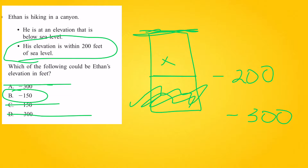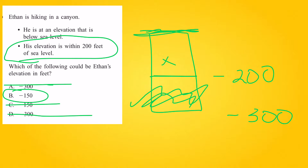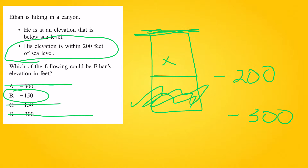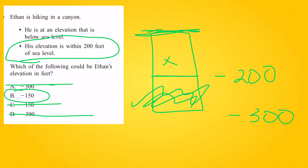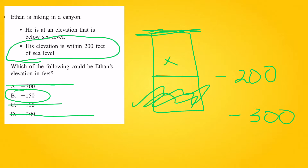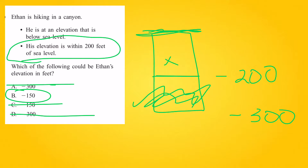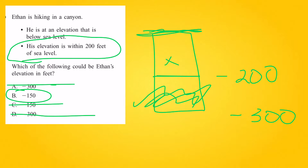Now let's start thinking about negative numbers here because we are below sea level. I'm going to draw a little line here — the second clue says his elevation is within 200 feet of sea level, so this is like minus 200. This is where Ethan is, somewhere in this column right here.